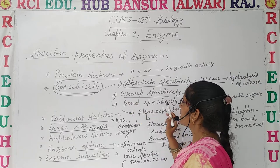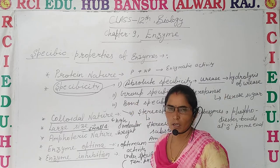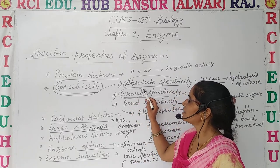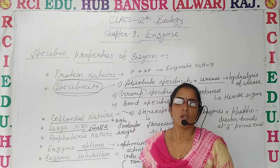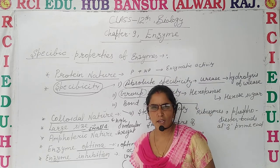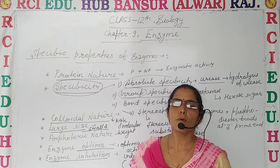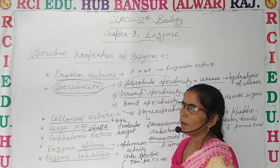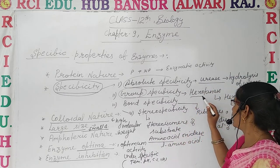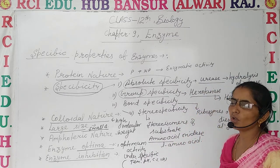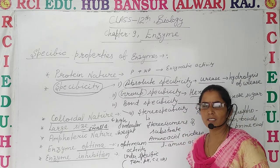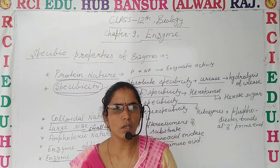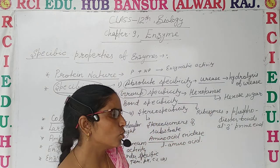The second is group specificity. As suggested by the name, it means some enzymes can catalyze a group of reactions. For example, hexokinase — hexokinase is an enzyme which catalyzes all types of hexose sugars.